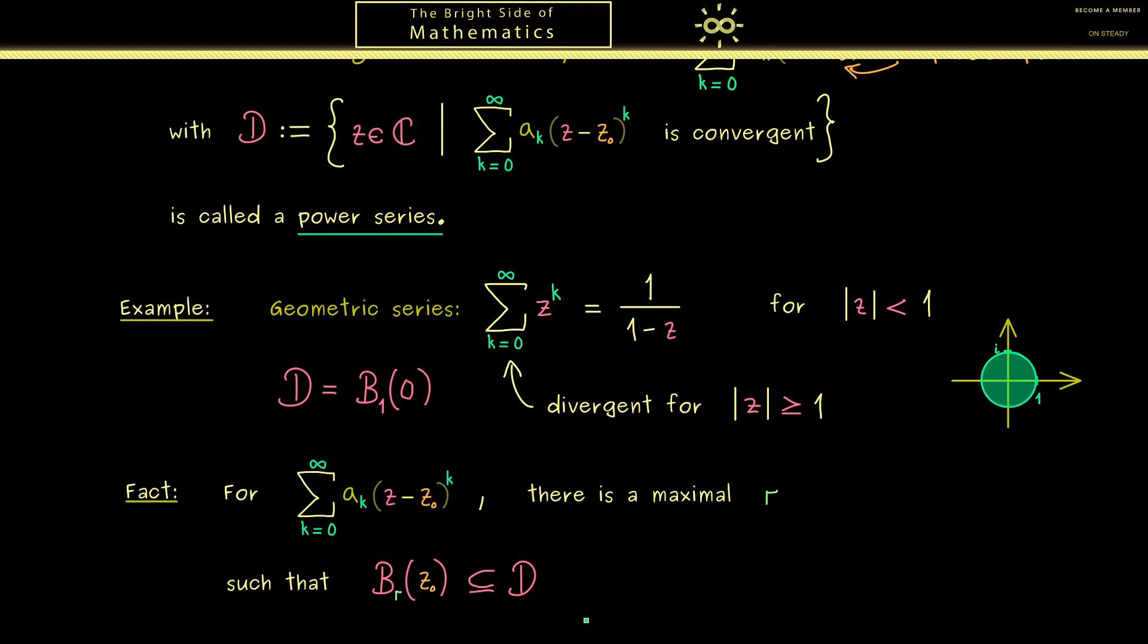So here you see the worst case for r would be to be 0, which means there is only one point in D, z_0. And the best case scenario would be that r is infinity, which means D is just the whole complex plane. So by using formulas we would write r comes from the interval 0 to infinity.